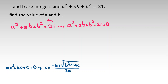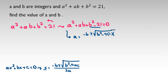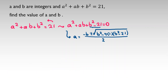Here, if I consider this as a quadratic formula in terms of a, then a equals negative b plus or minus the square root of b squared minus 4 times 1 times (b squared minus 21), all over 2. The coefficient of a squared is 1, and the constant term c is b squared minus 21.